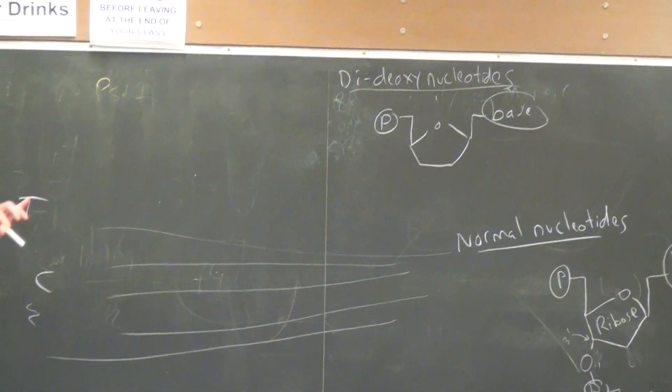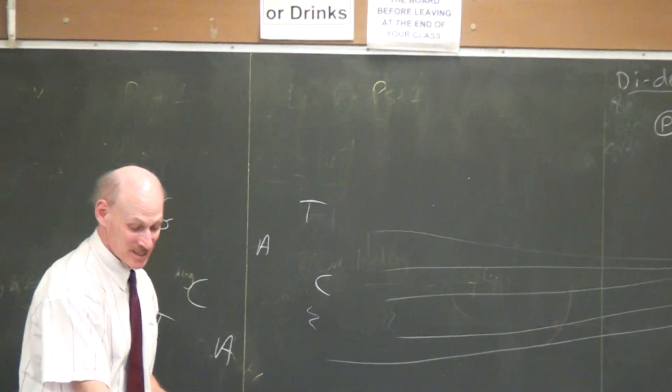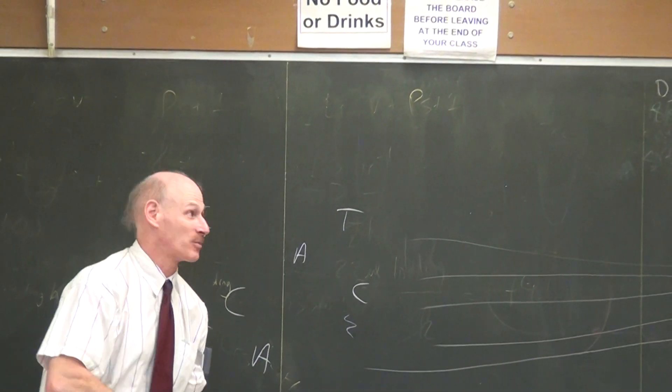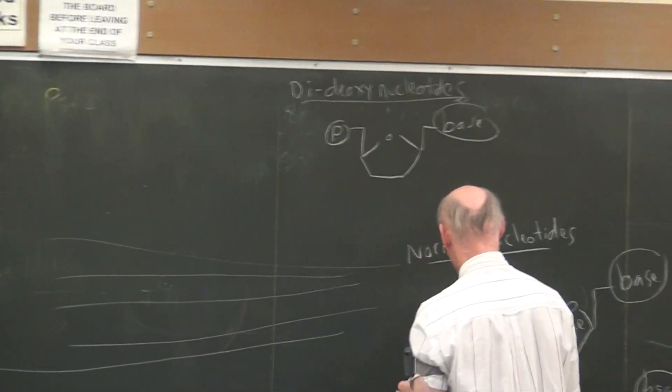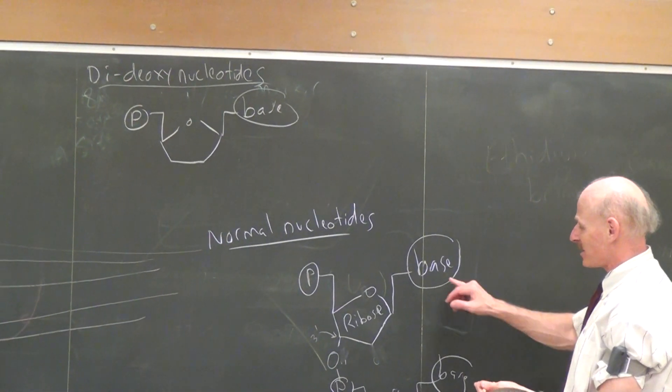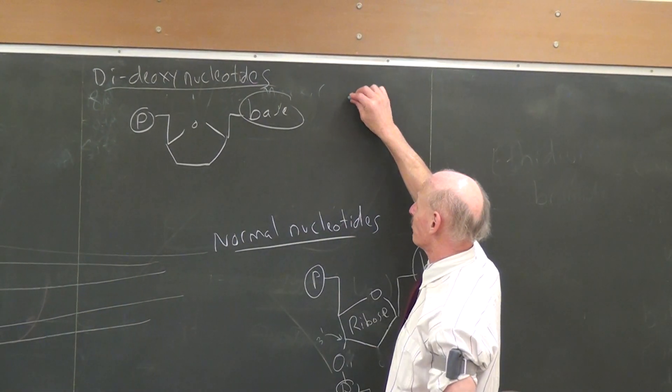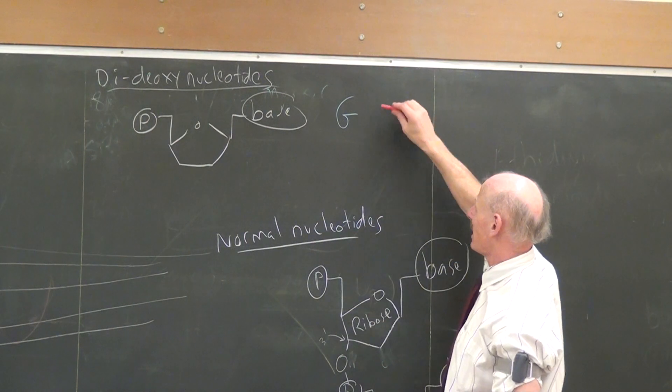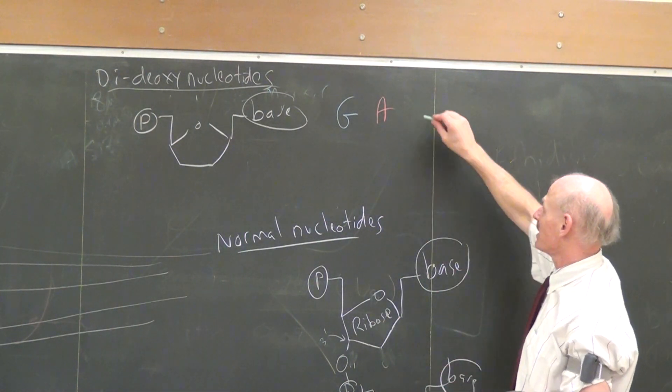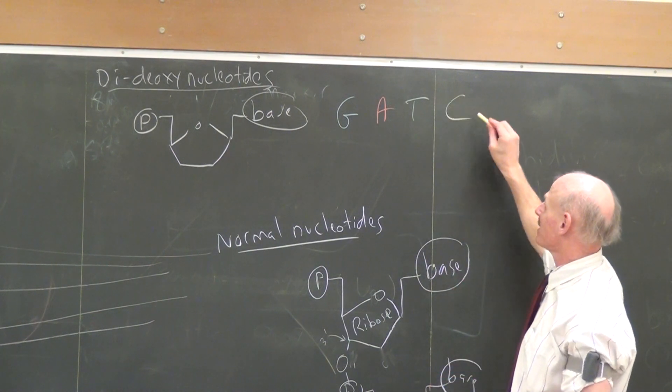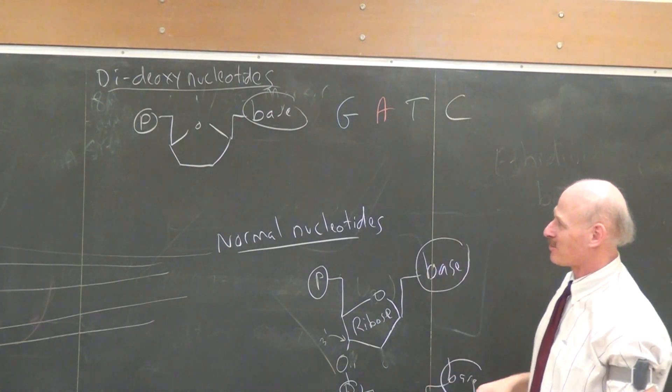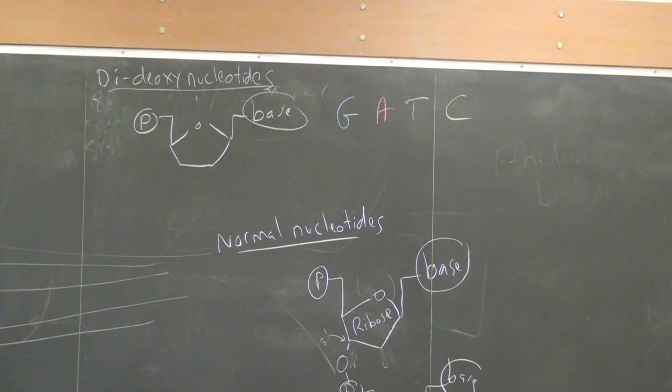And the other modification for these dideoxynucleotides is this. They attach different color pigments to the base right here. In other words, instead of just being a plain old G, A or T or C, they might have blue colored G's, red colored A's, green colored T's, and yellow colored C's. Whereas the standard bases are more or less colorless.